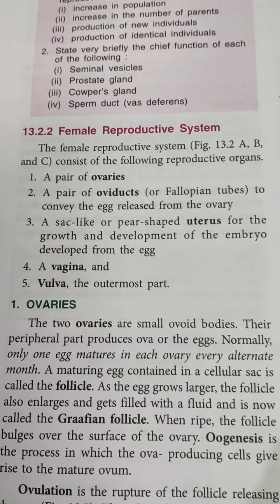A maturing egg contained in a cellular sac is called the follicle. As the egg grows larger, the follicle also enlarges and gets filled with fluid — it is now called the Graafian follicle. So a follicle is the sac in which the maturing egg is contained, and the Graafian follicle is that follicle which is matured, enlarged, and filled with fluid.